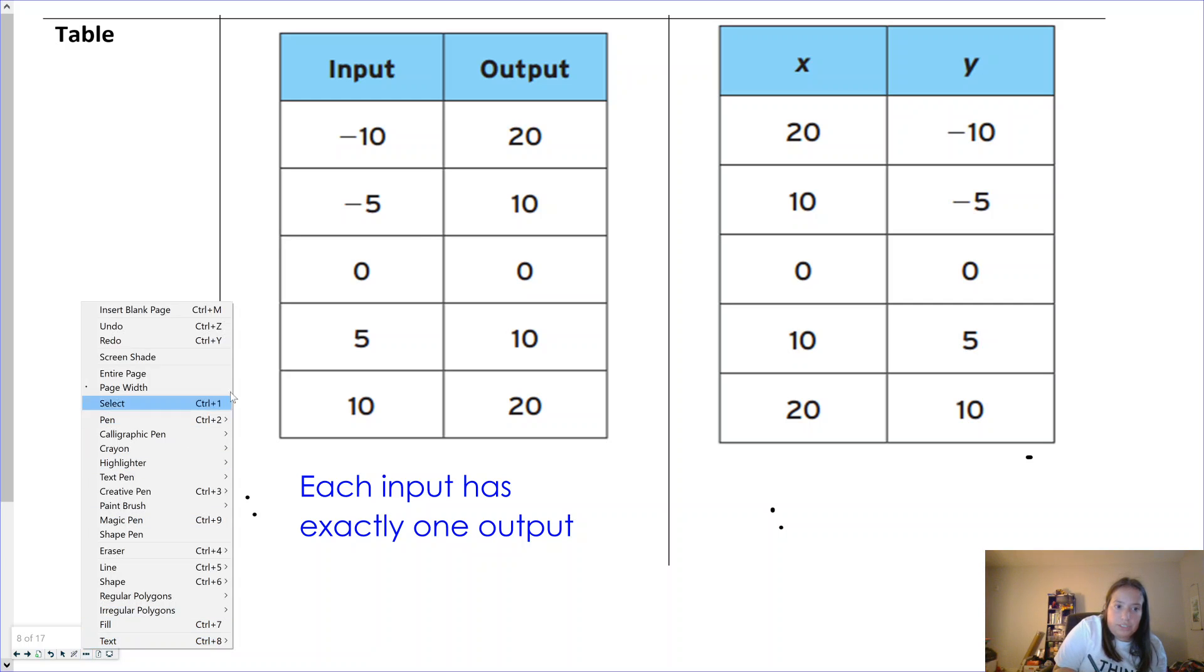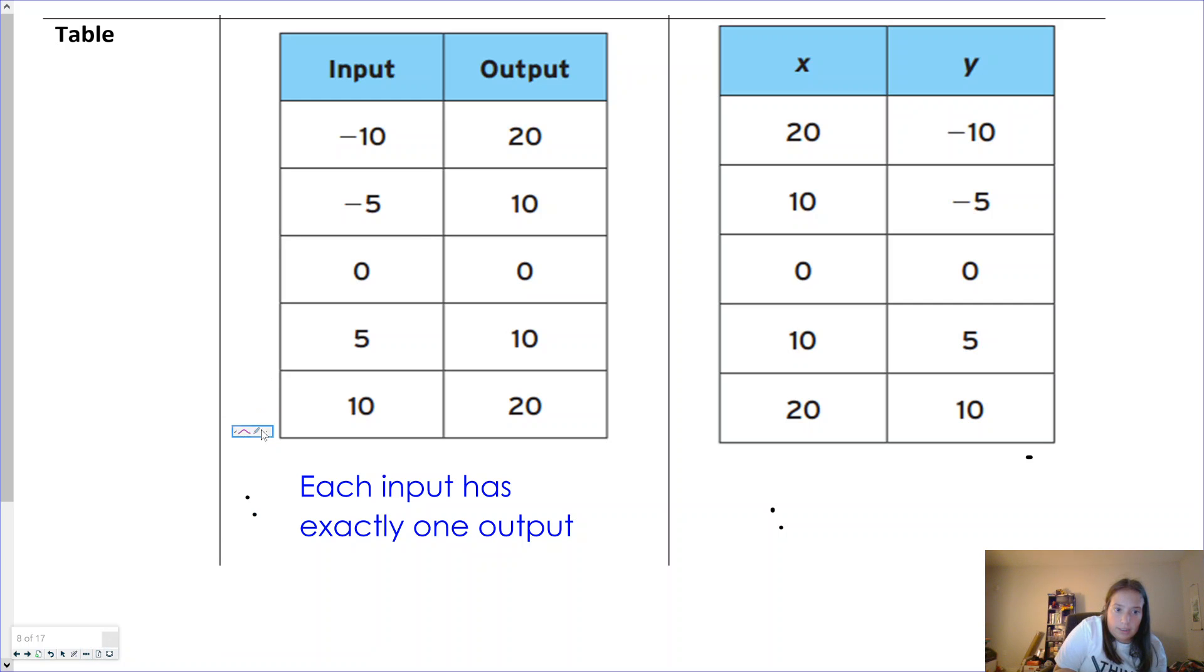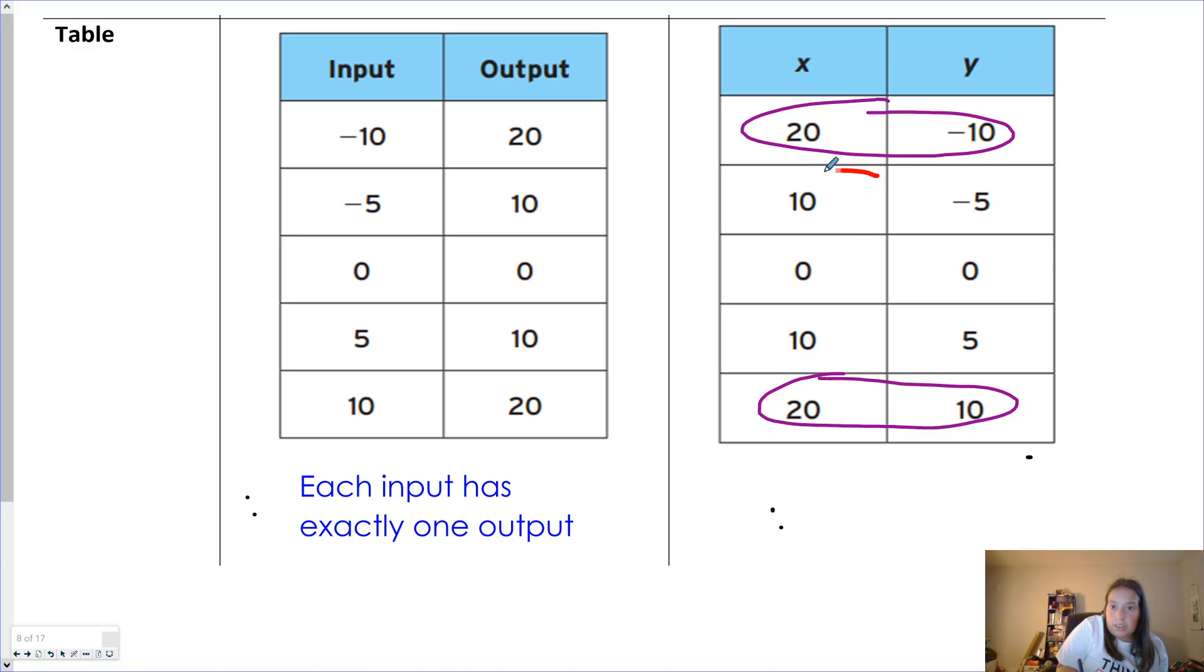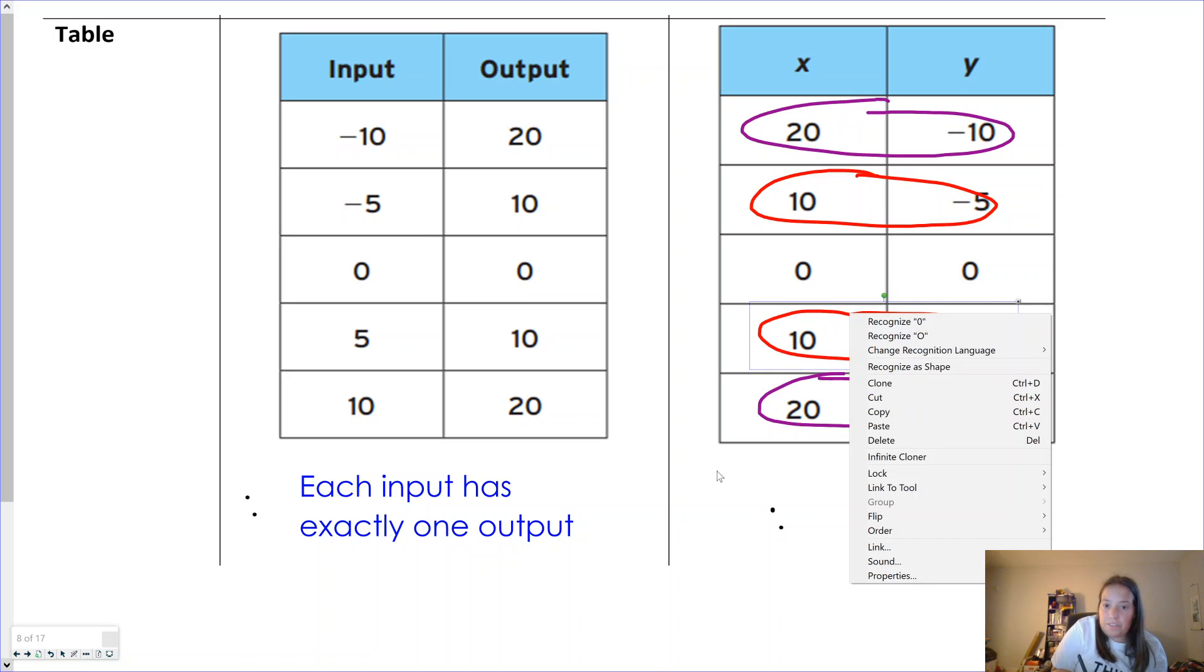However, on the other side, 20 goes to -10, 20 goes to 10. To make matters even worse, 10 goes to -5, and 10 goes to 5.